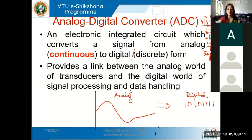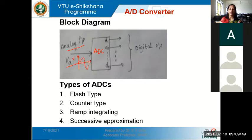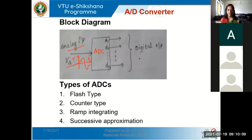Once it is converted to the digital domain, we can do all kinds of processing using a digital computer or digital signal processor. A simple block diagram of an ADC shows the analog input VA fed to the ADC block, which converts that analog input — a signal with voltage varying continuously with respect to time — into digital values. These digital values are usually in binary representation.